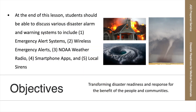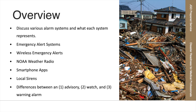The lesson objective is that students should be able to discuss various disaster alarm and warning systems, including the Emergency Alert System, the Wireless Emergency Alerts, the NOAA Weather Radio, smartphone apps, and local sirens. We will cover each in progressive order and also discuss what the different alert types mean: advisory, watch, and warning.